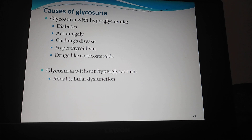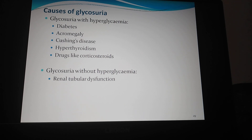Causes of glycosuria. Glycosuria with hyperglycemia is seen in cases of diabetes, acromegaly, Cushing's disease, hyperthyroidism, and drugs like corticosteroids. Glycosuria without hyperglycemia can be seen in renal tubular dysfunction. We will discuss about ketones, bilirubin, and other substances in the next class. Thank you.